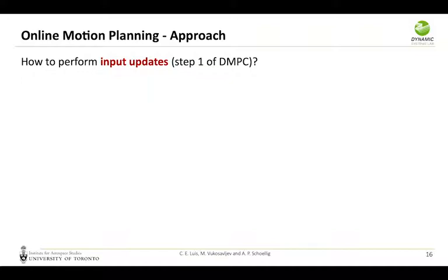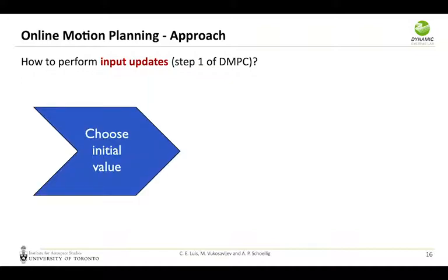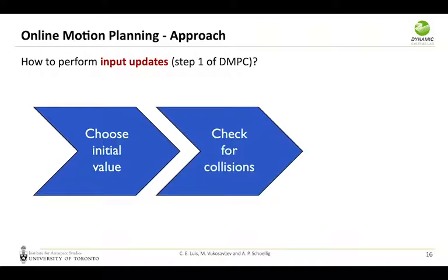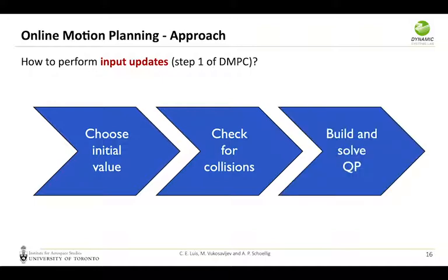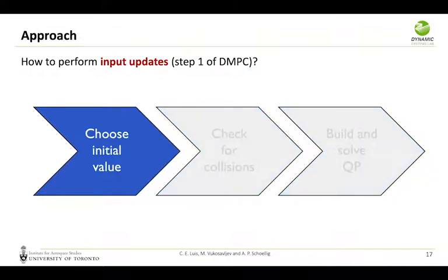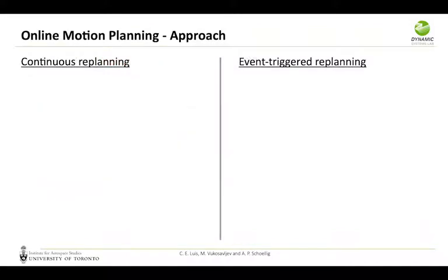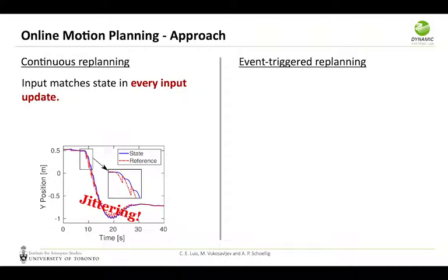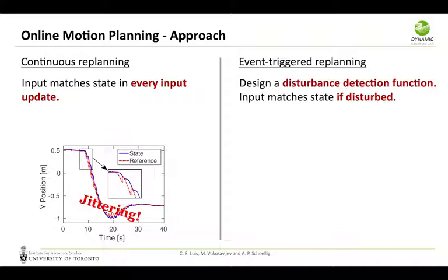Now, how do we perform these input updates? First we must choose a suitable initial value for our input, then we check for collisions using the information shared among agents, and lastly we build and solve an optimization problem in the form of a QP. We have two options: continuous replanning in which the input will match the measured state at every input update. In this case, this will lead to a jittering effect since we continuously introduce discontinuities in our reference to match the state, which is highly undesirable during execution.